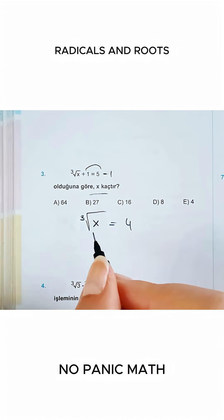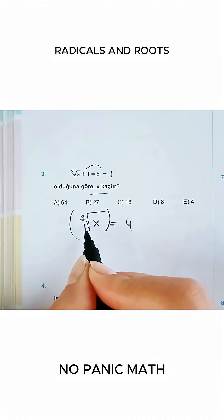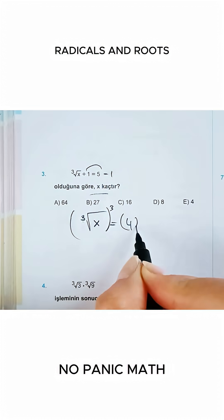Friends, to get rid of the root, you need to raise both sides to the power of the root's degree. So, since the root's degree is 3, the power should also be 3. Are we clear?